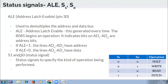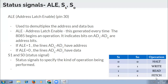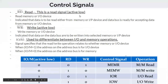S1 and S0 are status signals that specify the kind of operation being performed. When both S1 and S0 are 0, the operation is halted. When S1=0 and S0=1, it indicates a write operation (either I/O write or memory write). When S1=1 and S0=0, it is a read operation. When both S1 and S0 are 1, it is an opcode fetch cycle — meaning an instruction is being fetched from memory.